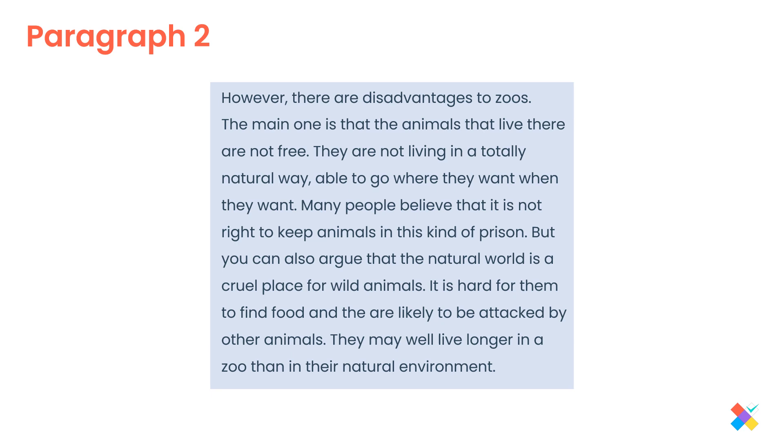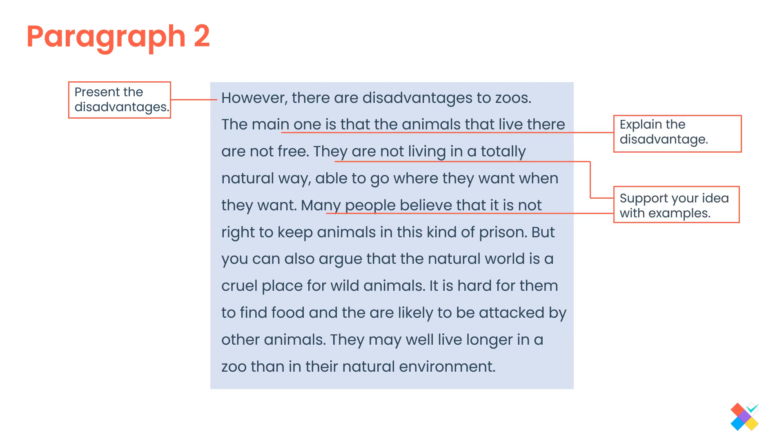Obviously, the next paragraph is going to deal with the drawback side, the disadvantages. And I start with however. I contrast and I present the disadvantages. I explain it. Yeah. The main one is that the animals that live there are not free. And then I support the idea with examples. They're not living in a totally natural way. And again, many people believe that it is not right. And again, I bring forth many, many arguments to support that my side is stronger. And I introduce it with but. Yeah? You can also argue that the natural world is a cruel place for wild animals. It's hard for them to find food. And they can be attacked by other animals. So it's better for them to stay in zoos. So basically, half of the second paragraph is about, oh, yeah, there are some disadvantages. But I think that my side is stronger. The one with disadvantages.